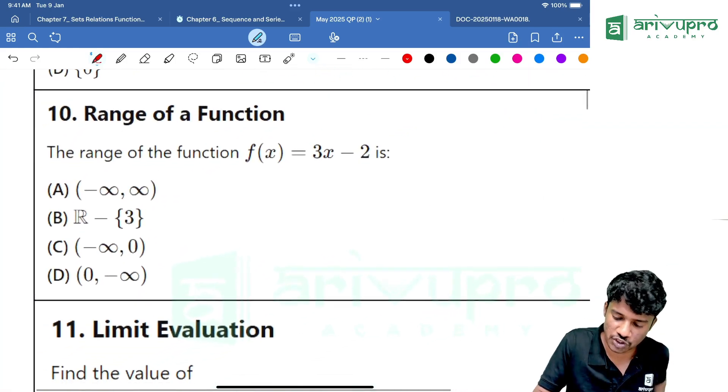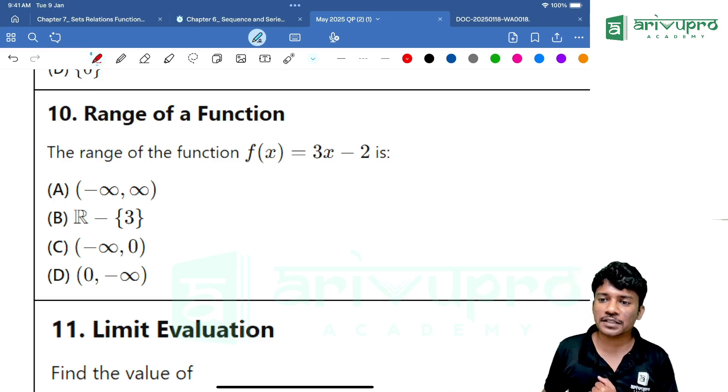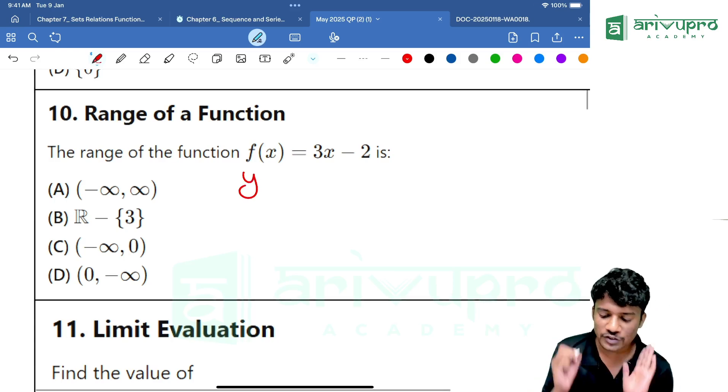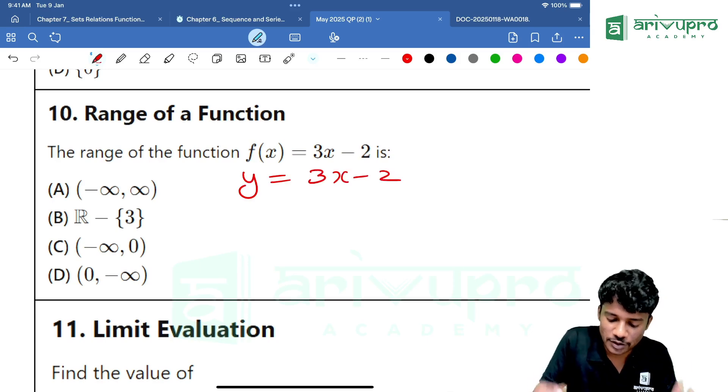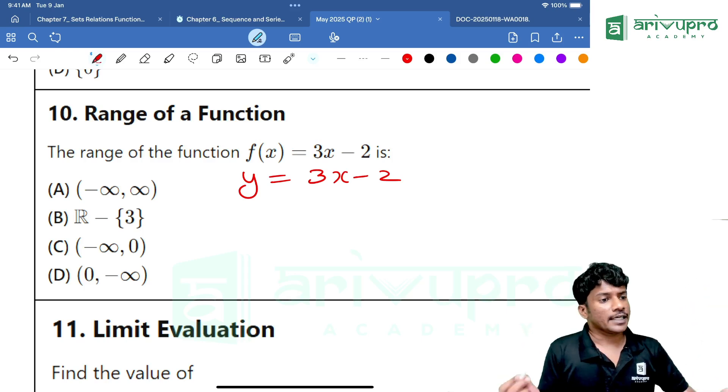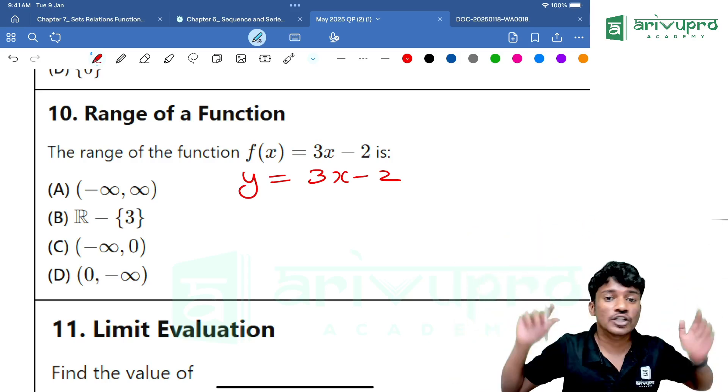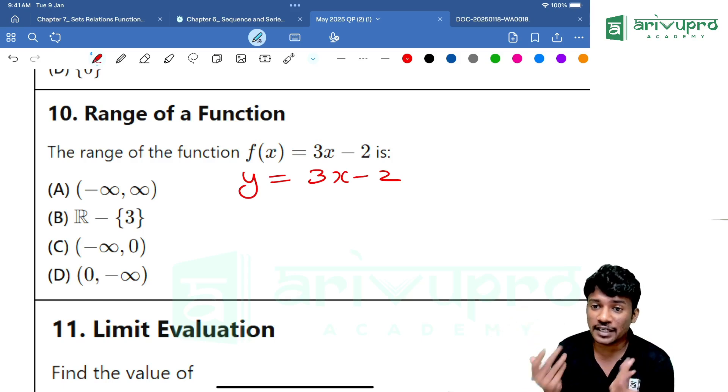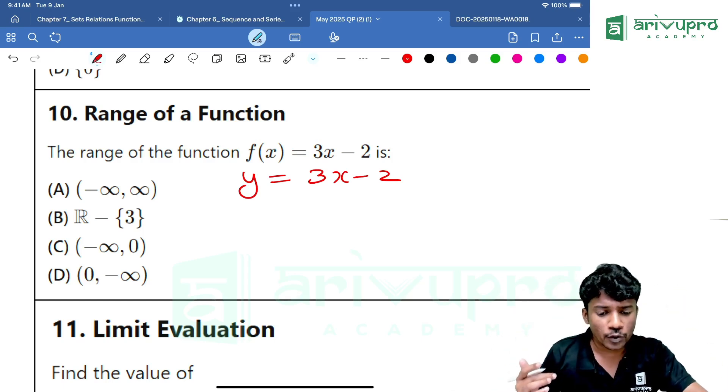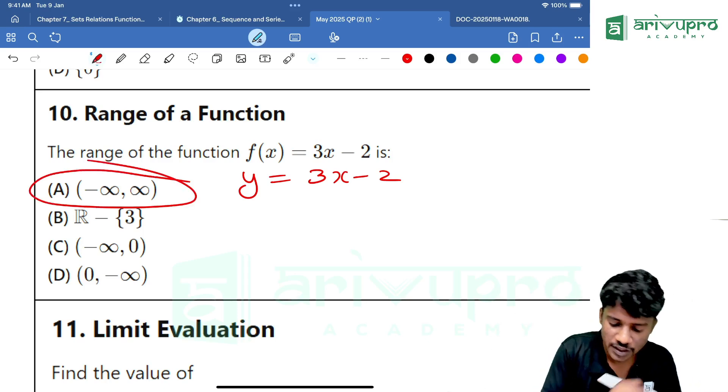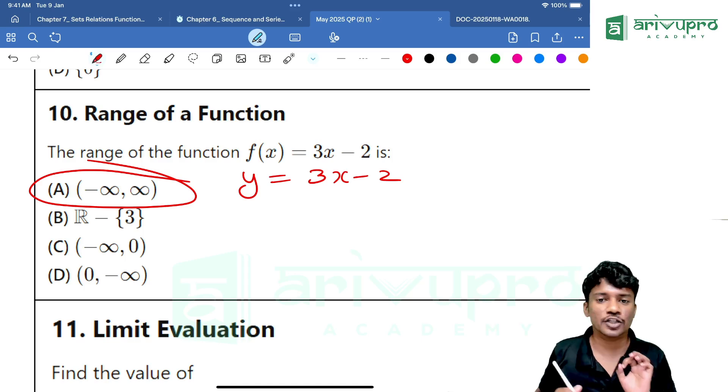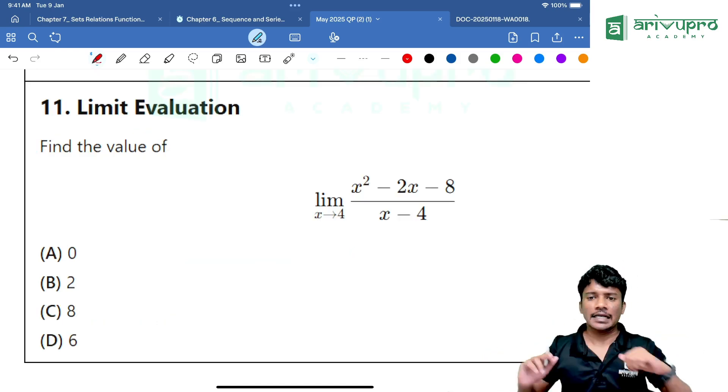This question. Tell me. People, come on. You can do this. What is the range? That means Y value. What is the range for Y is equal to 3X minus 2? What are the possible values? Any value is possible, right? From minus infinity to plus infinity, we can put any value. Since there is no denominator making it very complex. We can put any value. You will get it as Option A minus infinity to plus infinity.